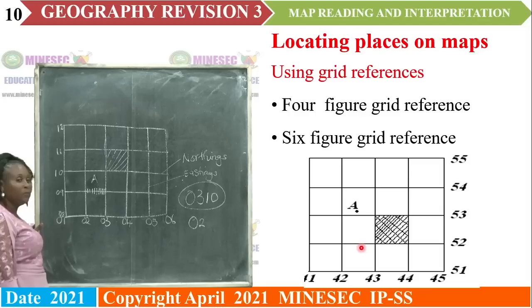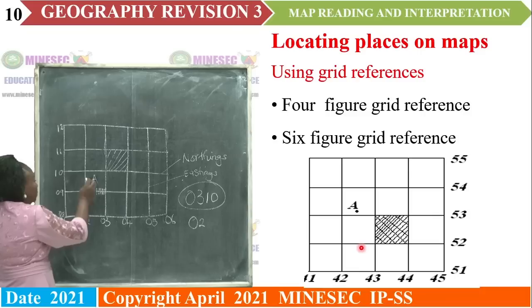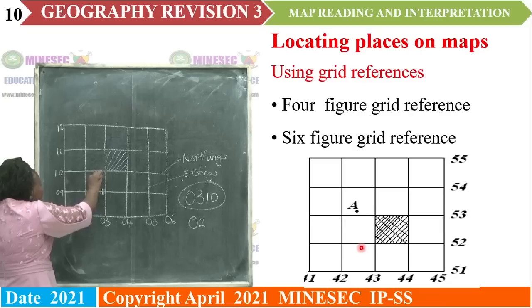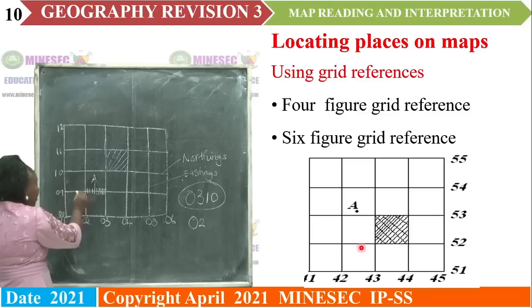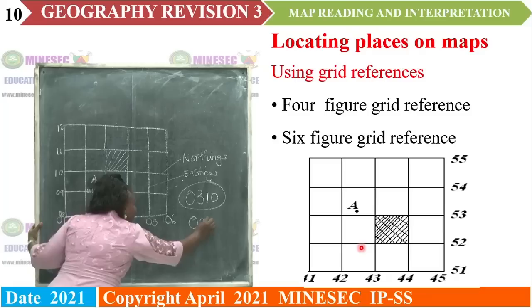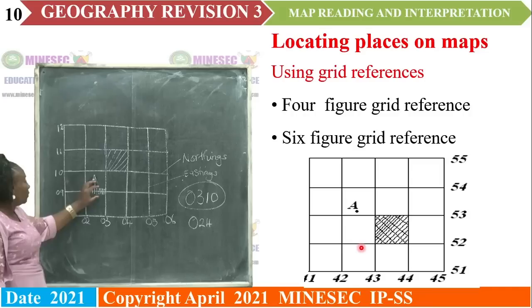Try as much as possible to centralize the feature. Use the third figure and link it to the units using a pencil. Connect it to the units and count from 1, 2, 3, 4. That is how I get my third figure for the six-figure grid reference.